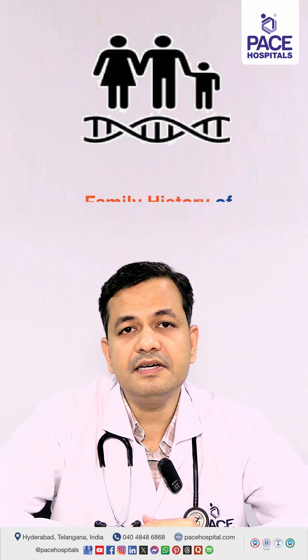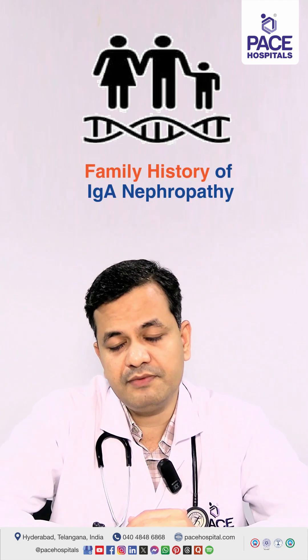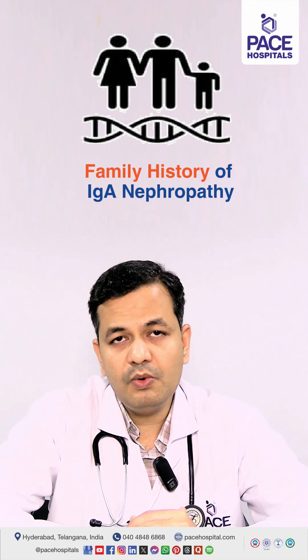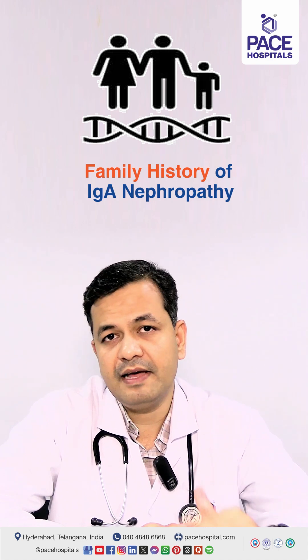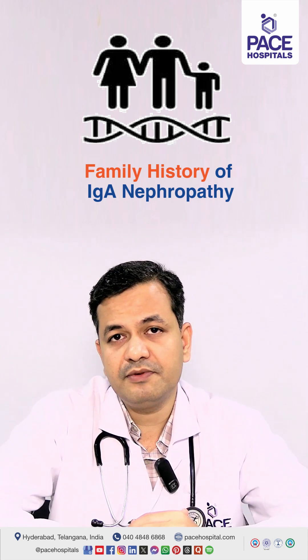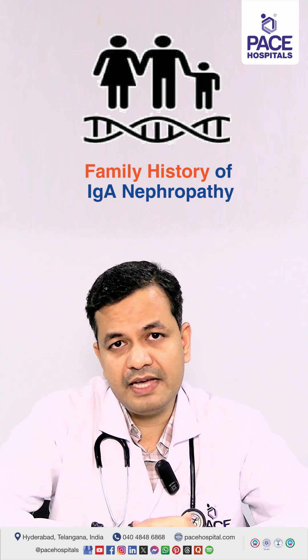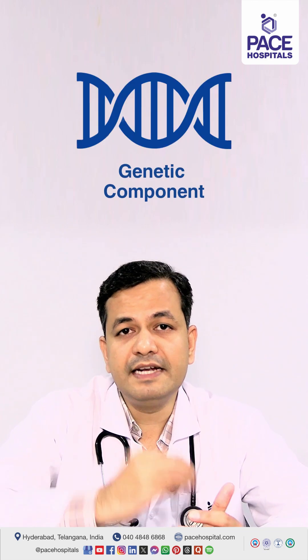The first risk factor is family history of IgA nephropathy. Those people who have patients of IgA nephropathy in their family are at increased risk of developing the disease. This means that there is a genetic component to this condition.